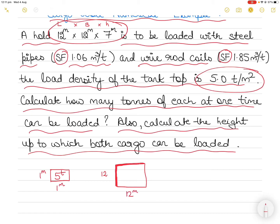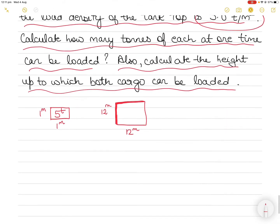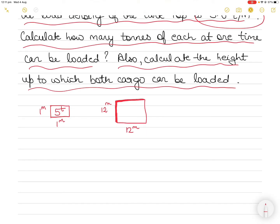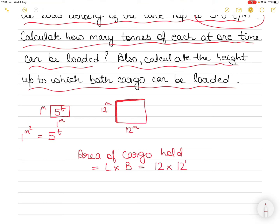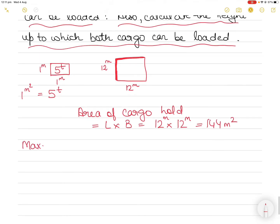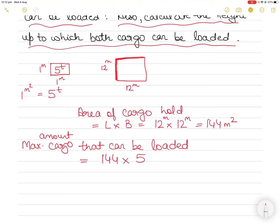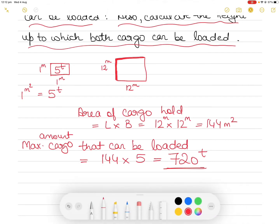As you can see in the drawing, the cargo hold is 12 by 12 meters. To find the maximum weight you can load, find the area of the cargo hold and multiply by 5 tons, since every 1 meter square allows 5 tons. The area of the cargo hold is length by breadth = 12 × 12 = 144 m². Therefore the maximum weight of cargo that can be loaded is 144 × 5 = 720 tons.